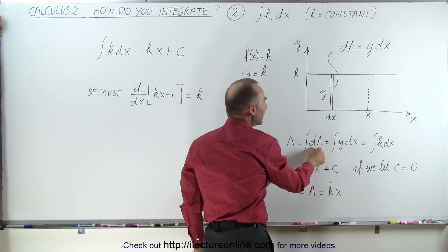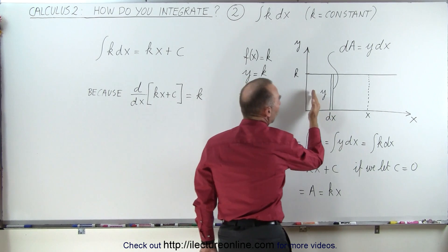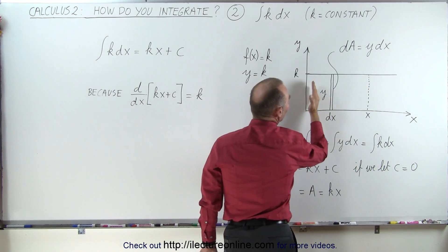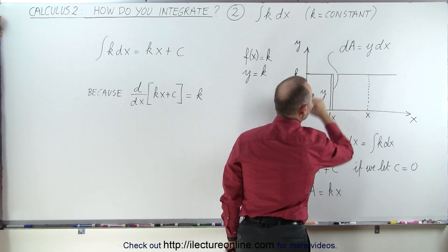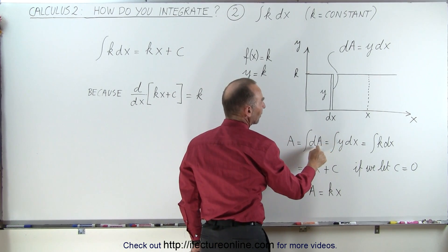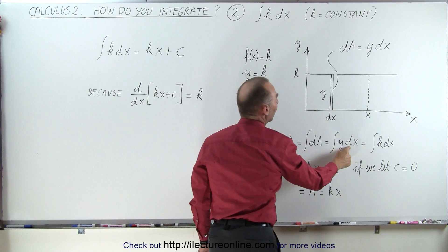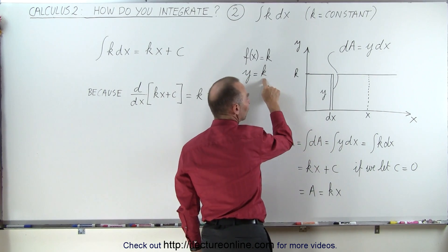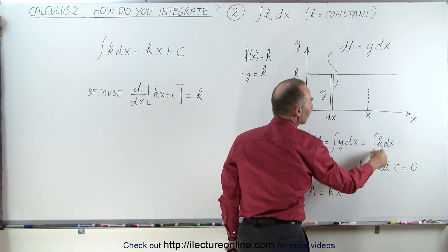If we now integrate that dA, that little strip, we add up all the little strips representing the entire area inside this rectangle right here. We call that A. So it's equal to the integral of that dA, which is y dx. And since y is equal to the constant k, that's equal to the integral of k dx.